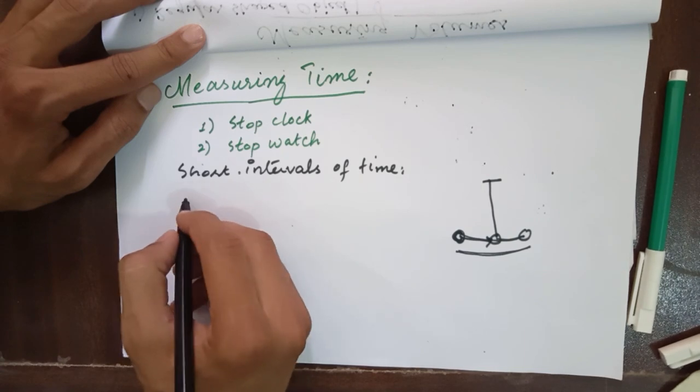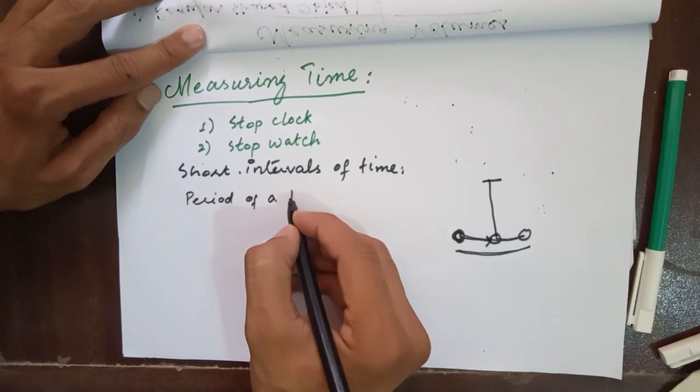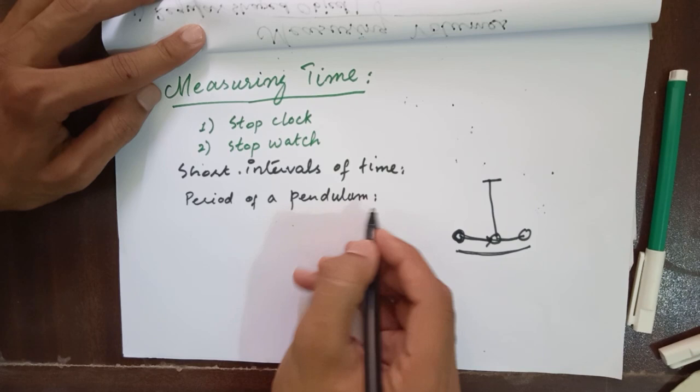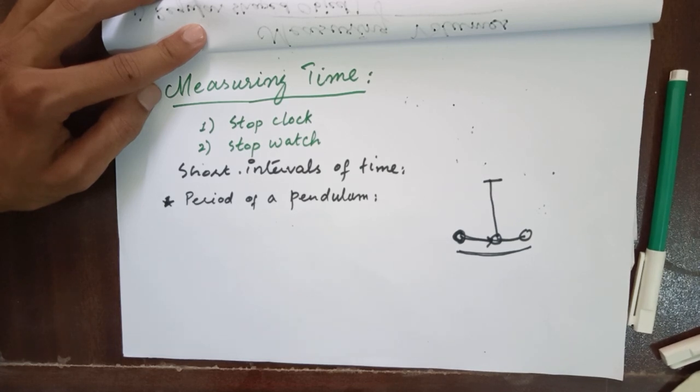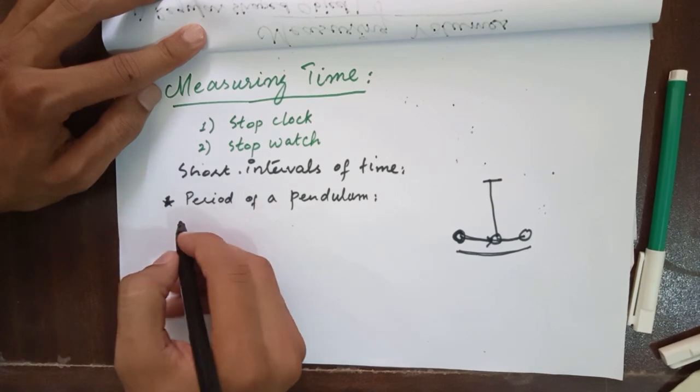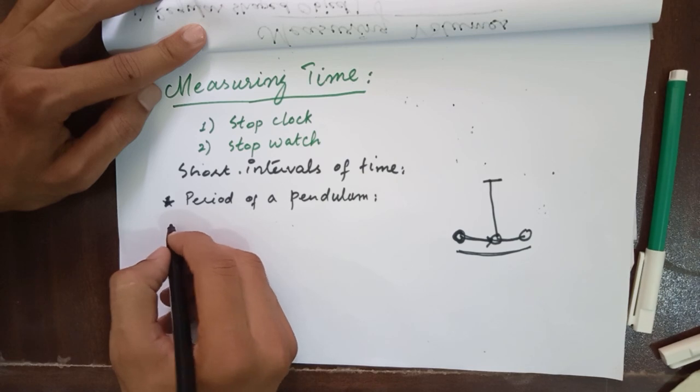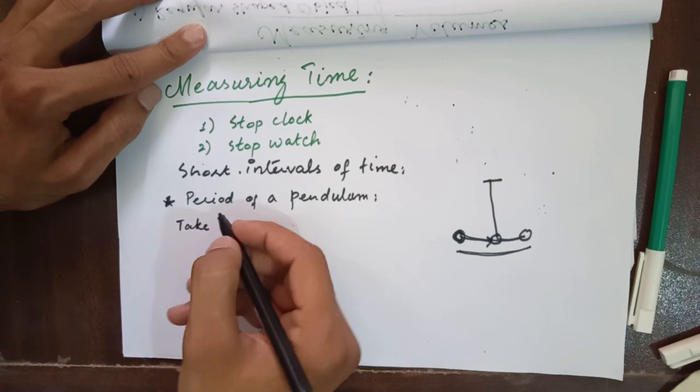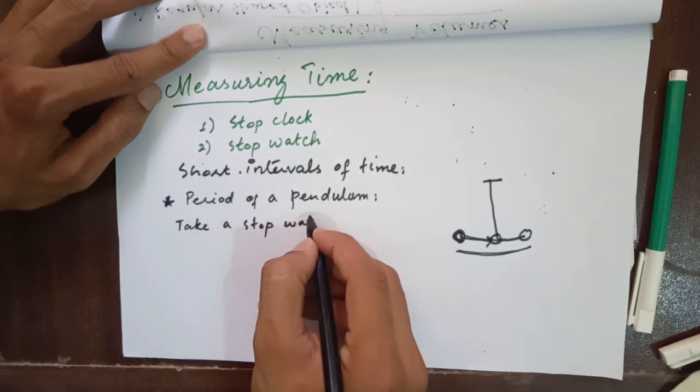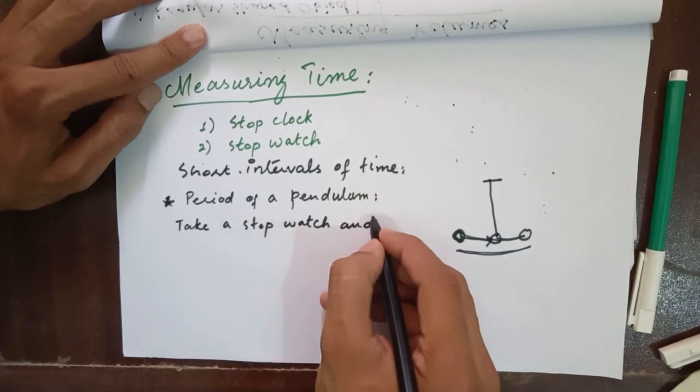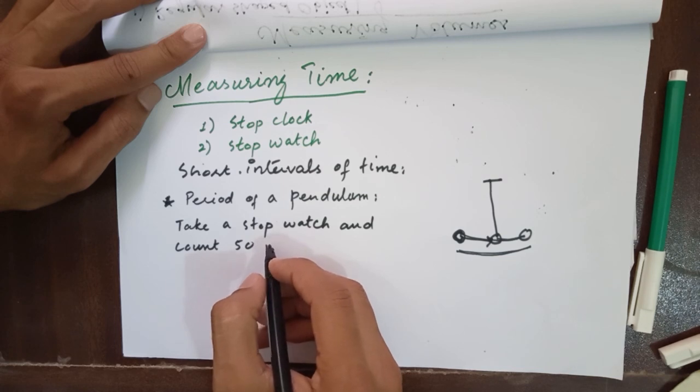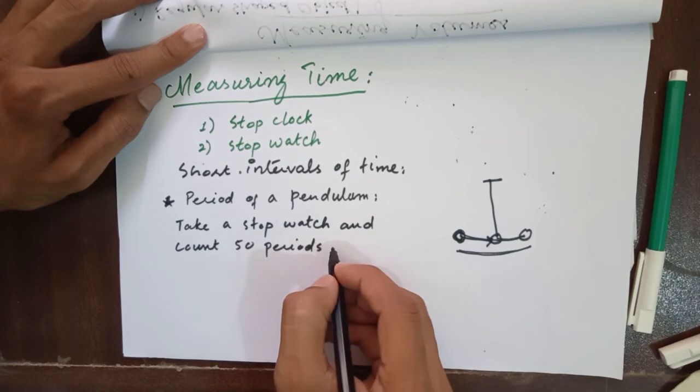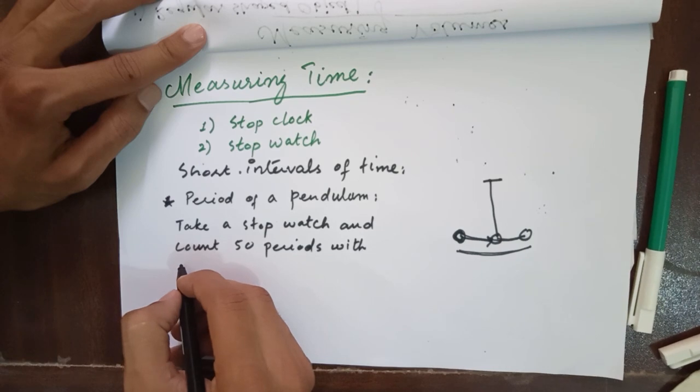And if we have to find out the period of a pendulum, then it is likely to get errors in the reading if we take a single cycle. To make our measurement more accurate, we will take a stopwatch and count 50 periods with the stopwatch.